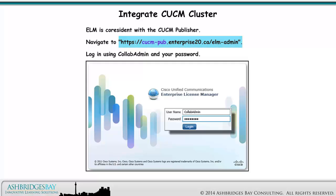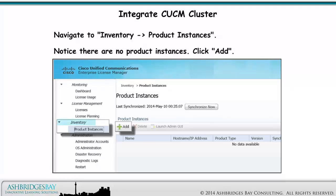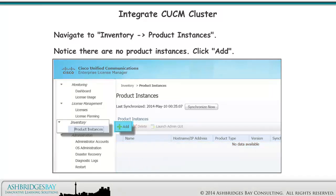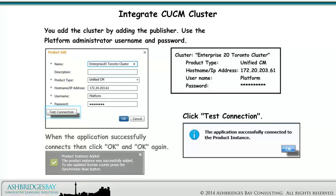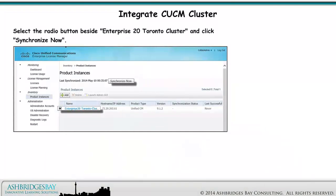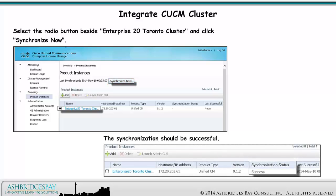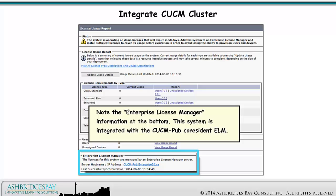Navigate to the ELM address. Log in using Collab Admin and your password. Navigate to Inventory > Product Instances. Notice there are no product instances — click Add. You add the cluster by adding the publisher. Use the Platform Administrator username and password, then click Test Connection. When the application successfully connects, click OK and OK again. Select the radio button beside Enterprise 20 Toronto cluster and click Synchronize Now. The synchronization should be successful.